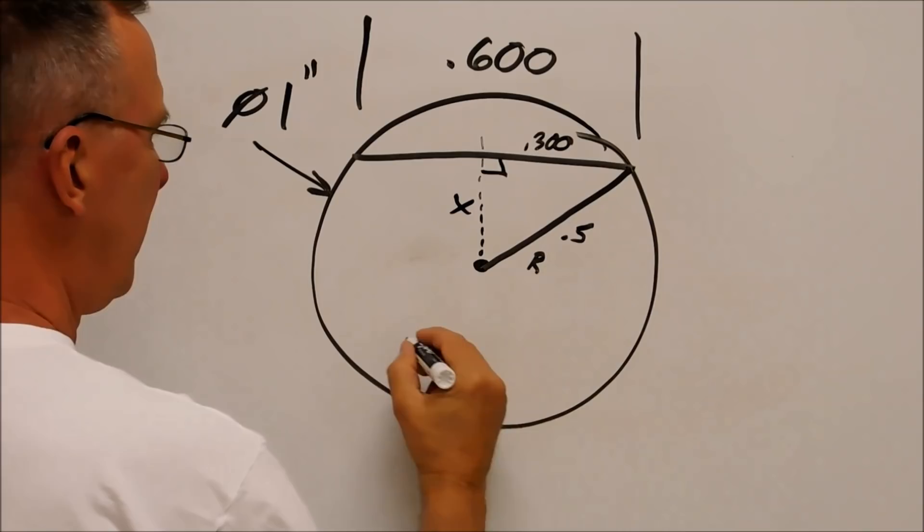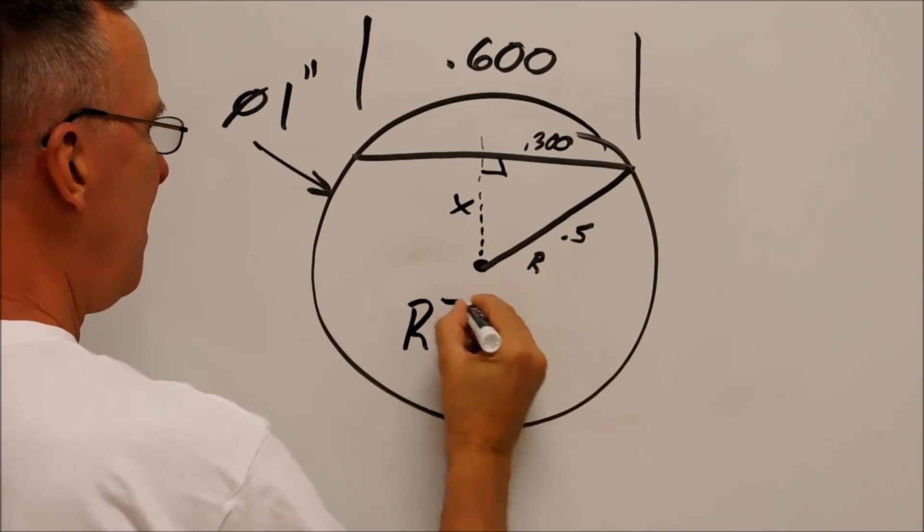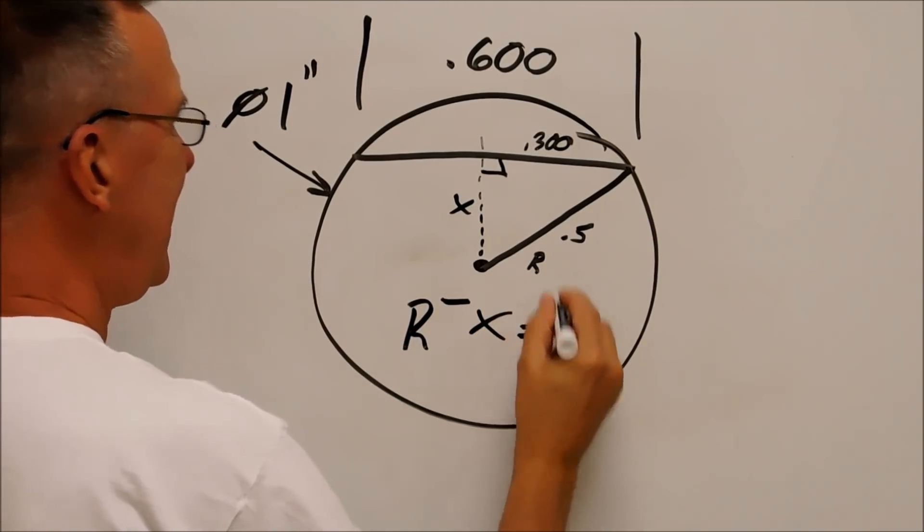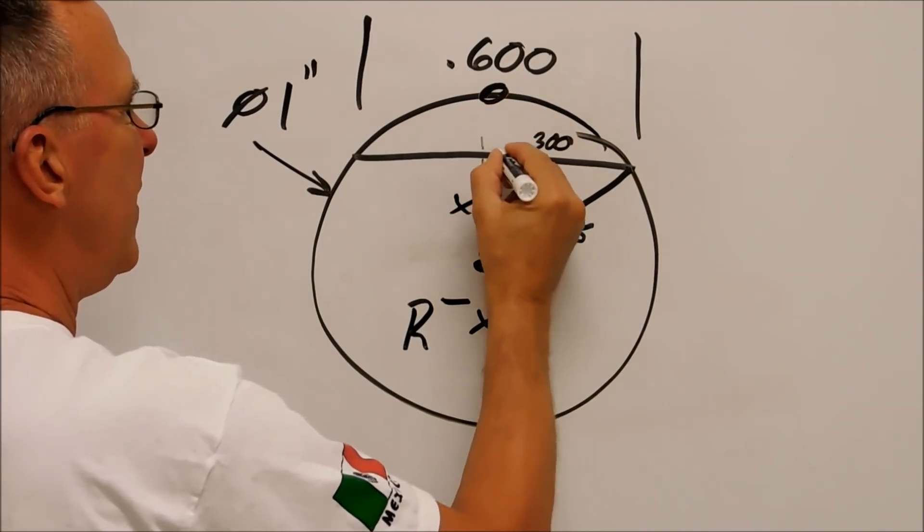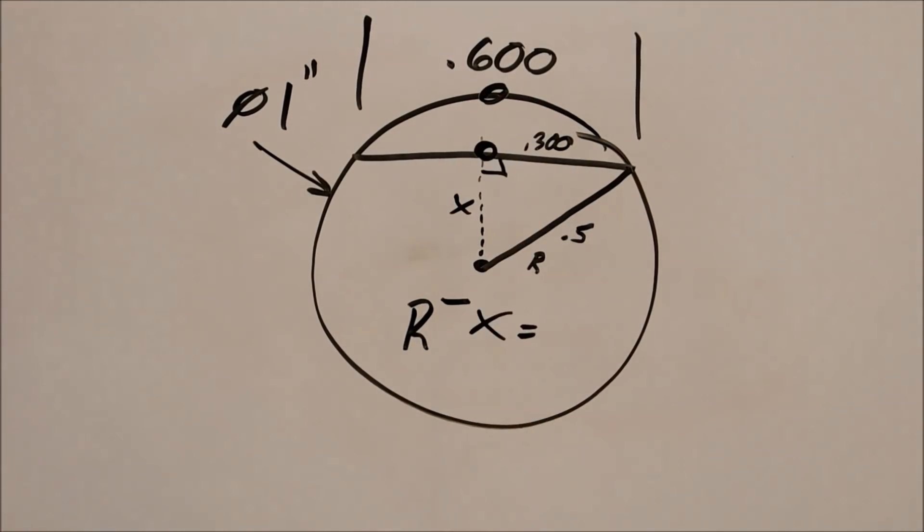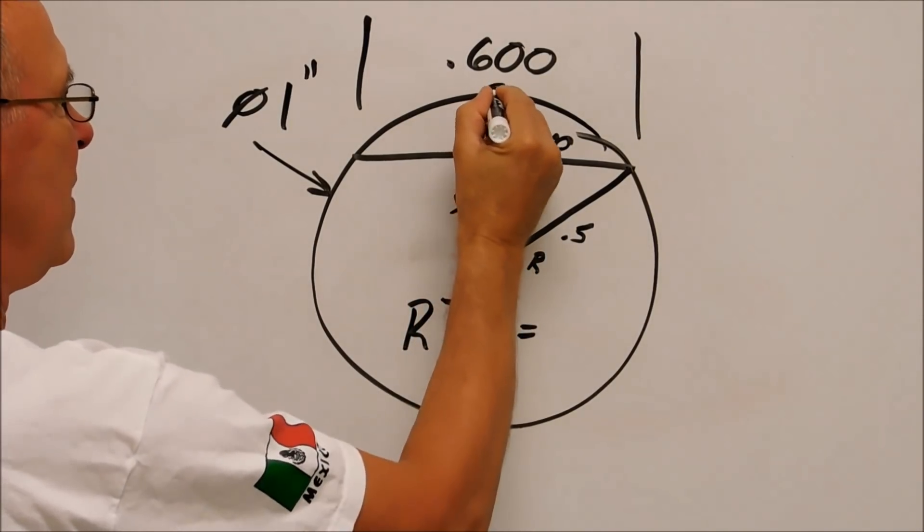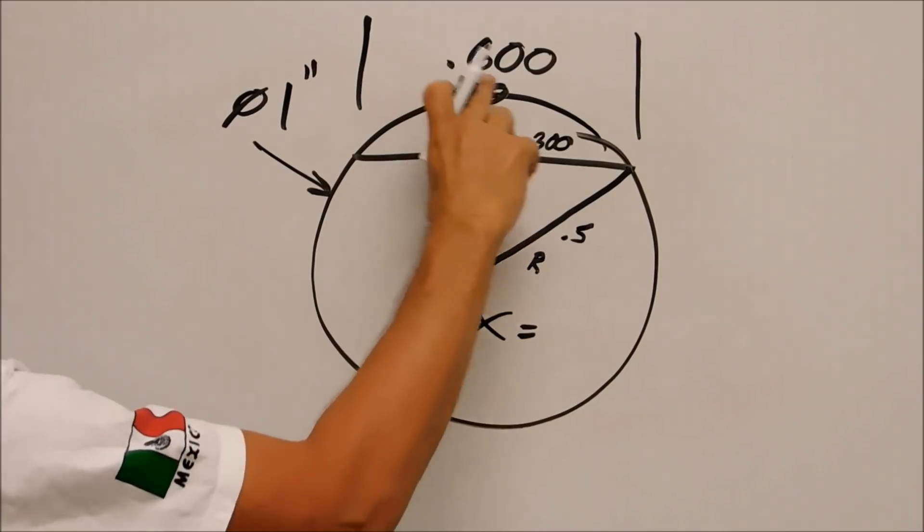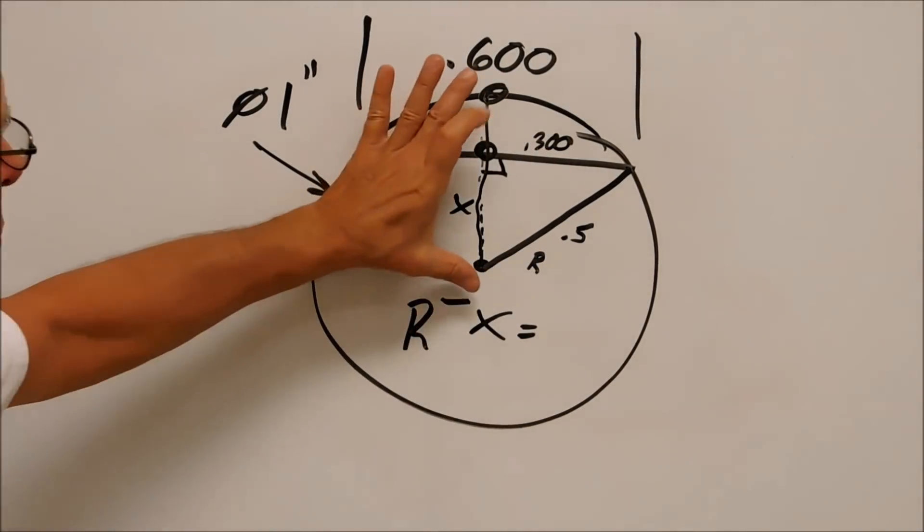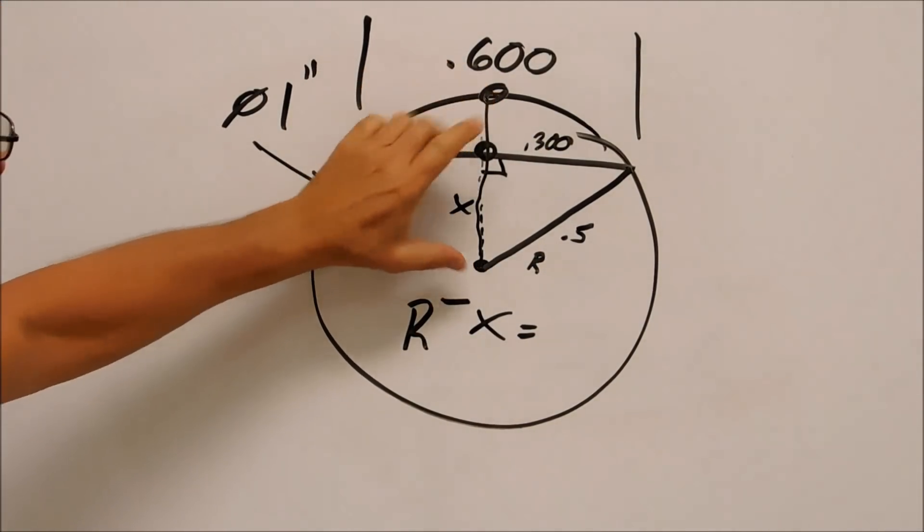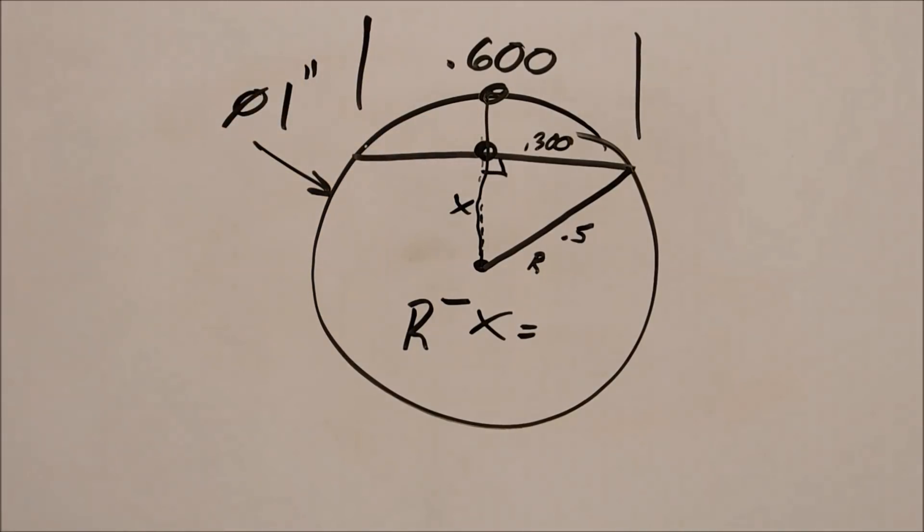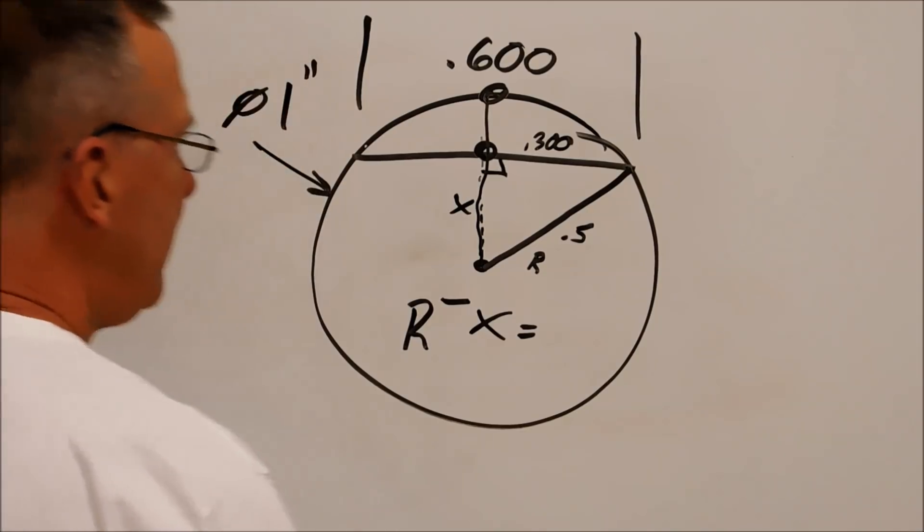And then it is radius minus X equals the depth right here. Radius minus X. Because it's the same radius going vertical. So the whole chord, the whole leg right here is a radius value. Minus this gives you the missing section. It's not that hard. Simple.